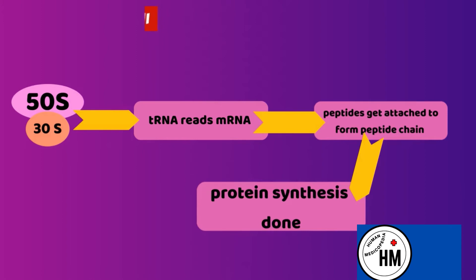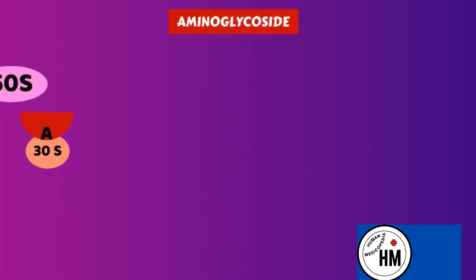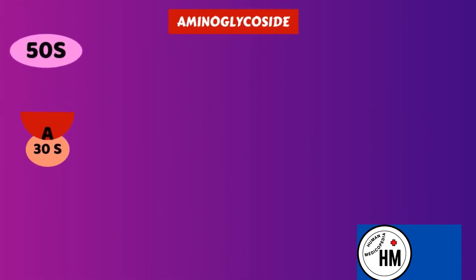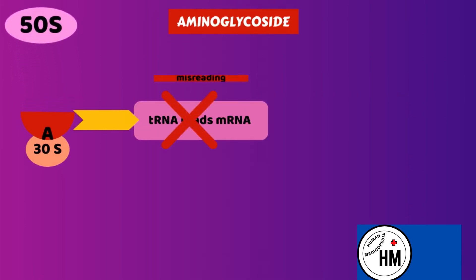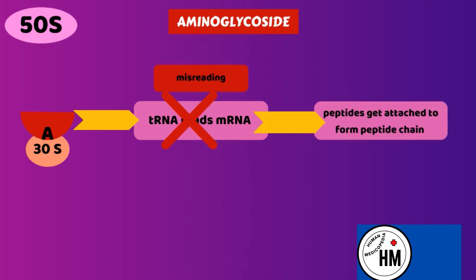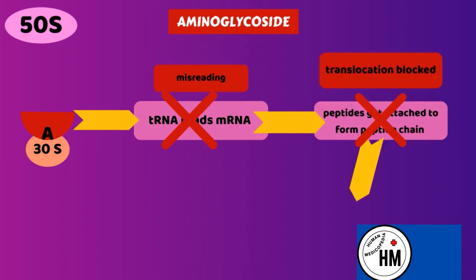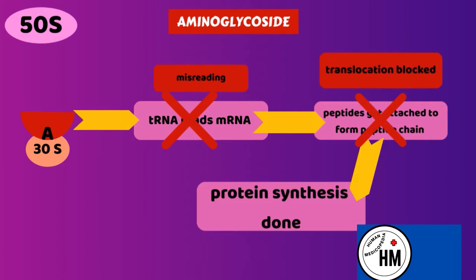Eventually a protein is formed. But with aminoglycosides, the drug binds to the 30S subunit and does not let it form the initiation complex with the 50S subunit. This results in misreading of messenger RNA, the peptide chain gets blocked — known as a translocation block — and eventually protein synthesis is inhibited.